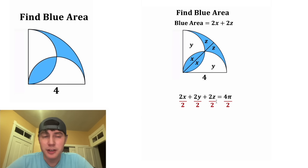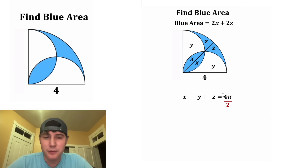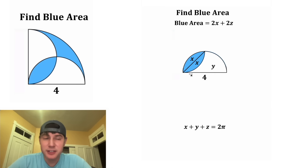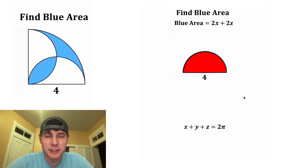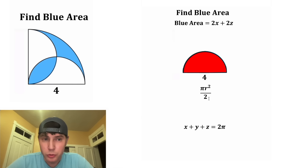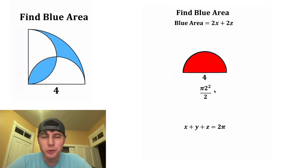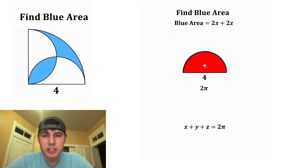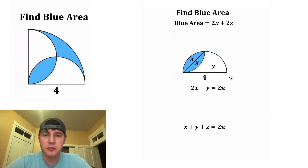Next, we can divide everything by 2. On the left-hand side all these 2s will cancel each other out, and on the right-hand side 4 pi divided by 2 is the same thing as 2 pi. Next, let's focus on this semicircle — let's color it red and find the area of the red. The area of a semicircle is pi r squared divided by 2. This 4 is the diameter of the semicircle, which means the radius would be equal to 2. 2 squared is 2 times 2, and these 2s cancel, so the area of this red region is equal to 2 pi. And this 2 pi is the same thing as x plus y.